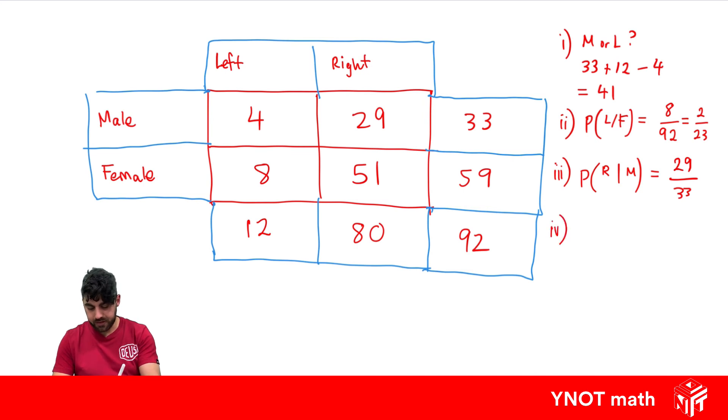What about the probability that a female is selected given that they are right-handed? If we know they're right-handed, we're only picking from the right-handed people, of which there are 80 in total. The probability of picking a female - well, there are 51 right-handed females, giving us a final answer of 51 out of 80.